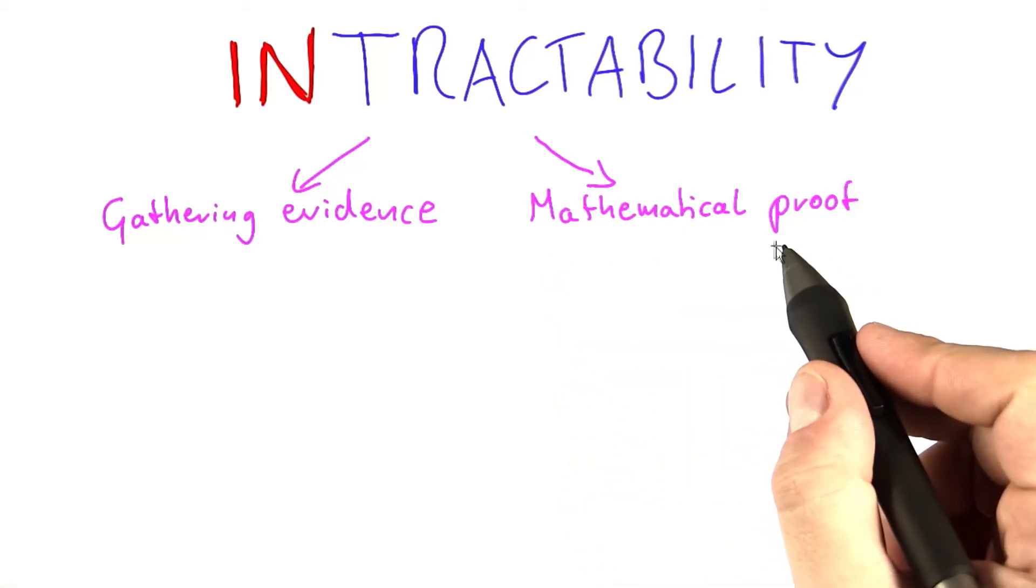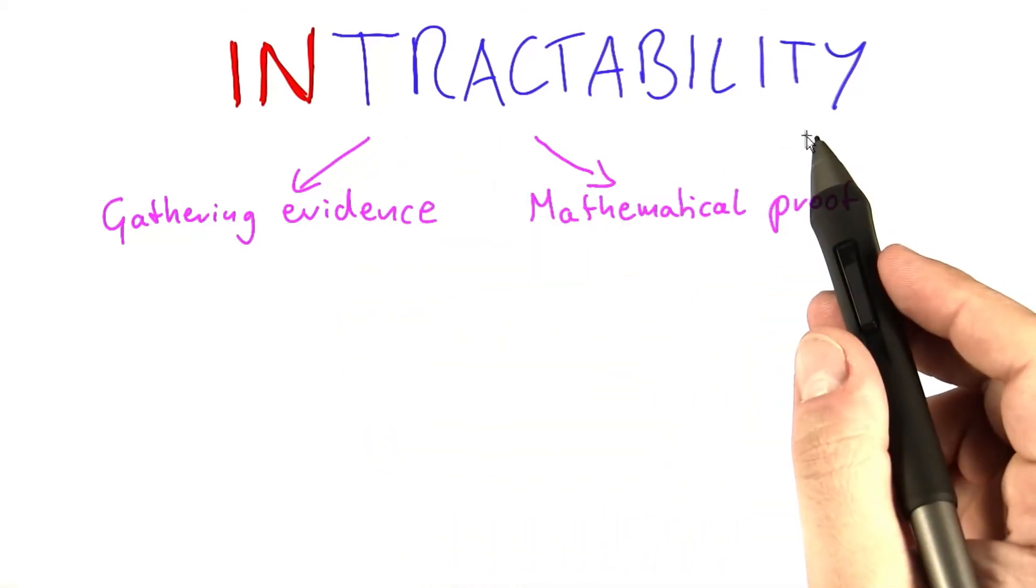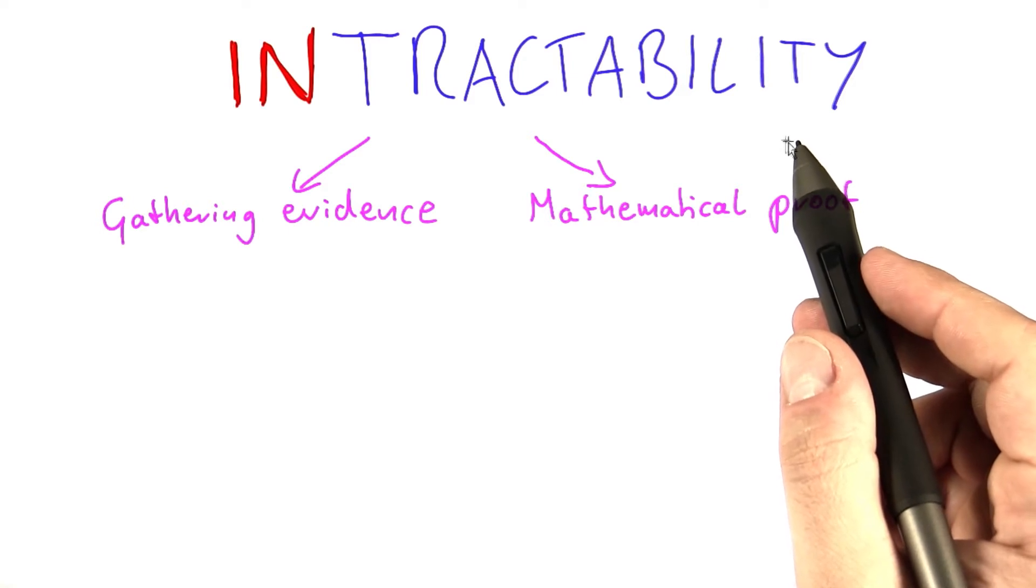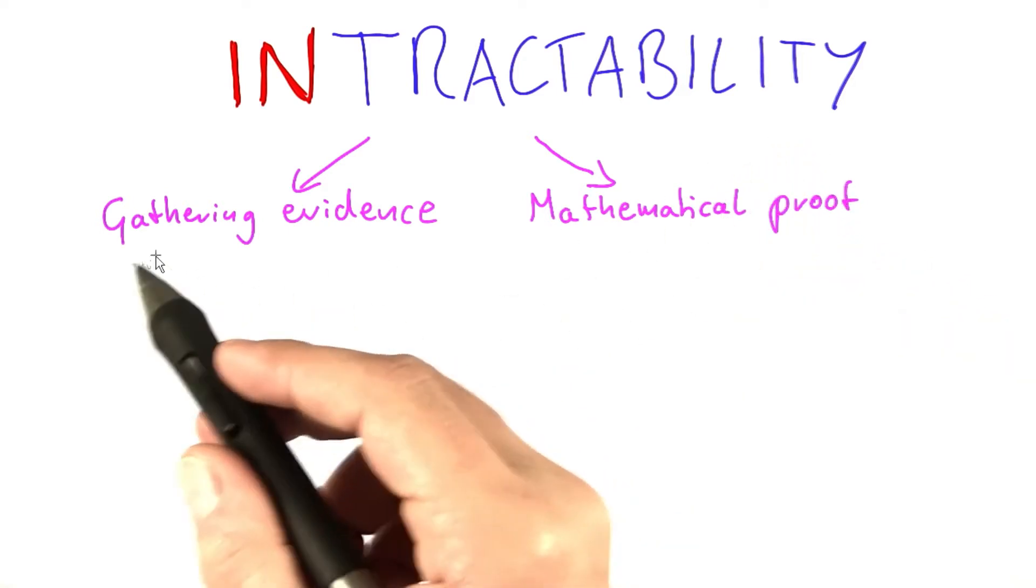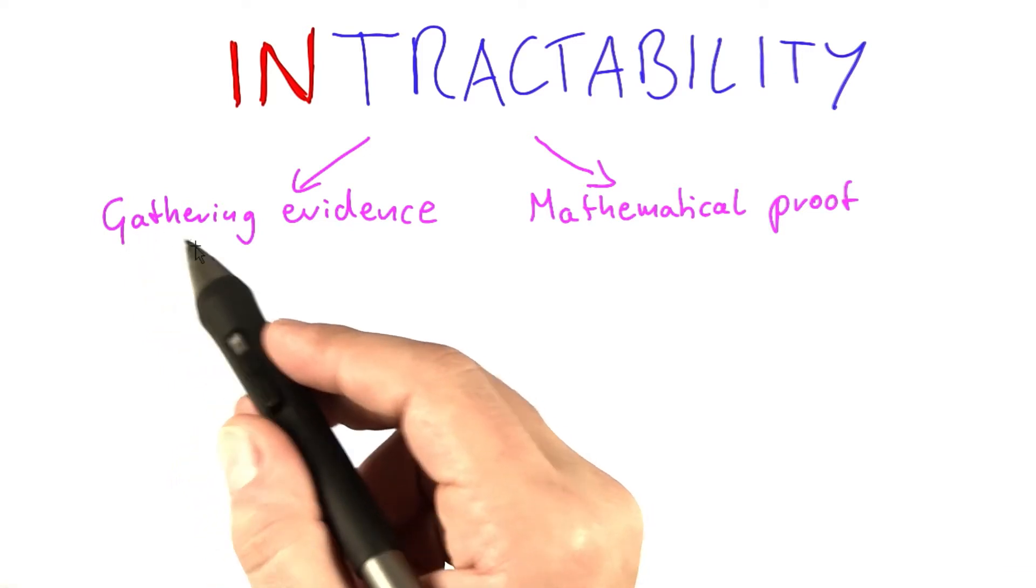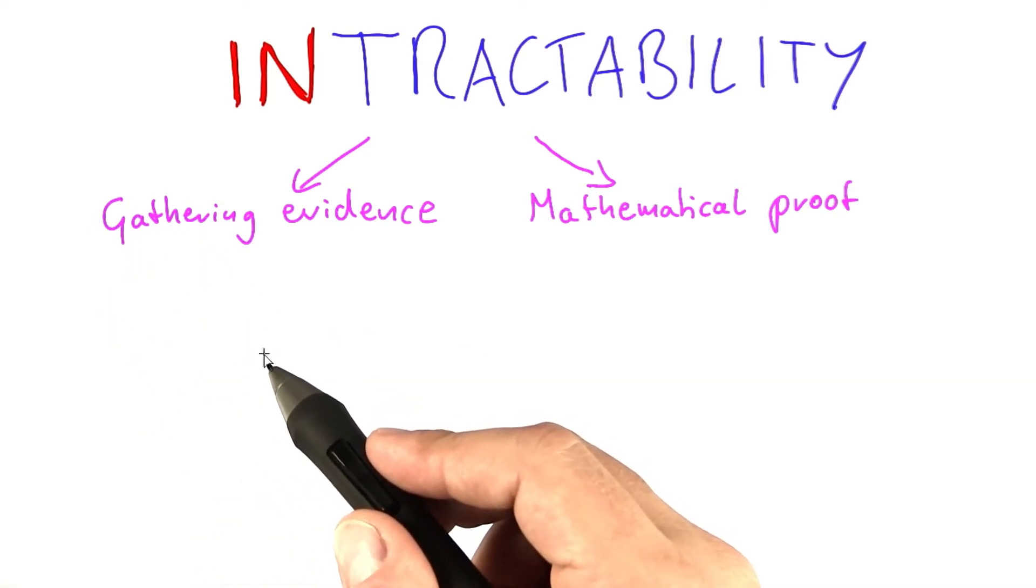Since finding a mathematical proof for showing the intractability of the problems that Alice, Bob and Carol are working on seems to be rather hard, we're first going to start with gathering evidence that their problems might be intractable.